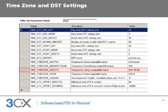Next, the phone will need to know which time zone it is in. We can set this in the timeTimeZoneLinksys variable. The default value is GMT-5, but we can customize this for the Houston time zone by changing the value to GMT-6.